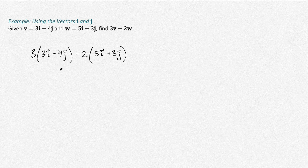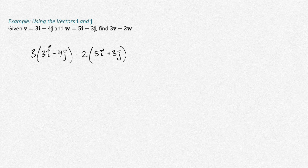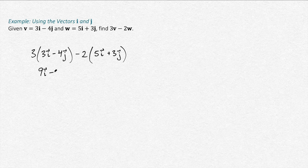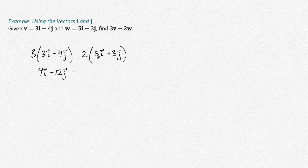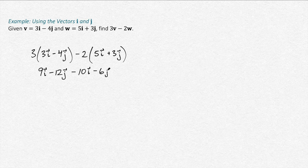And now we can just work through this like we would a normal algebra expression. We distribute these numbers. So 3 goes in, we get 9i minus 12j. And then distribute the minus 2, we get minus 10i minus 6j.